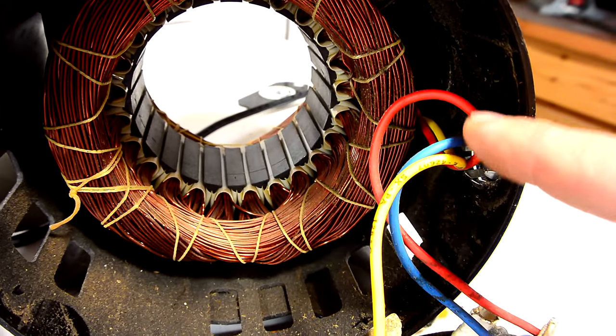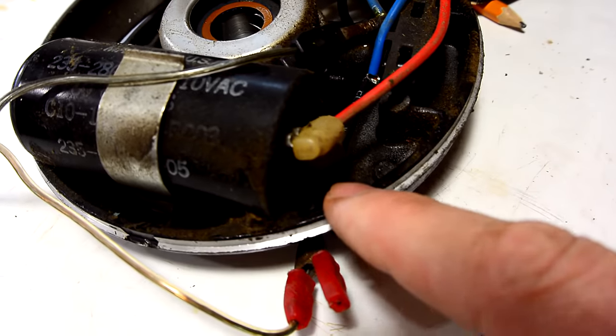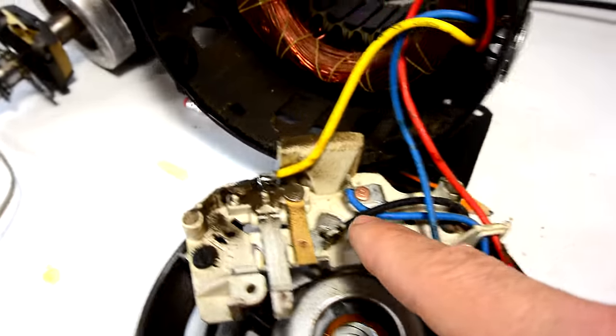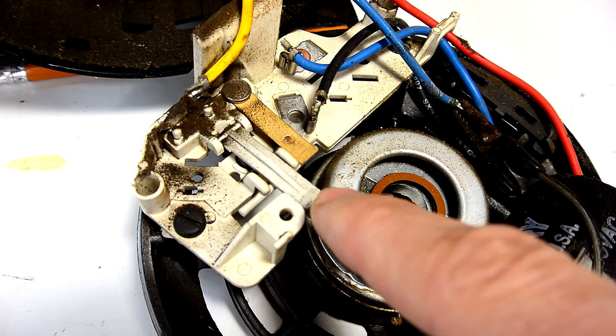One end of the starter winding is connected to this red wire and that goes to this capacitor and then the other side of this capacitor goes through this black wire onto here and that's the starter switch and that gets disconnected once the motor's up to speed.